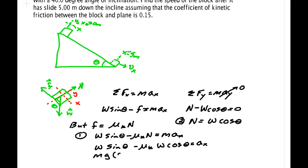But weight we can factor out. So I get mg sine theta minus mu k cos theta is equal to m a x. And we can cancel the m's.